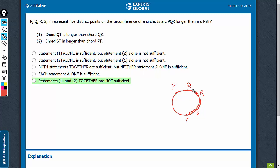The first statement says chord QT is longer than chord QS. Looking at this diagram, with QT greater than QS, if I draw R here, PQR will be bigger. But if I draw R here instead, PQR will be smaller than RST.